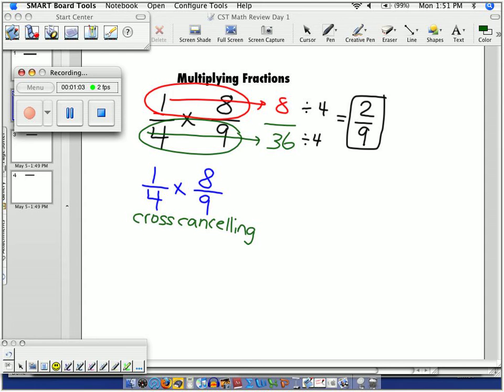Cross-cancelling is this: Can I take some number and divide them both by a common factor? What can I divide 4 and 8 both by?